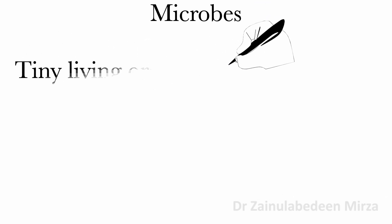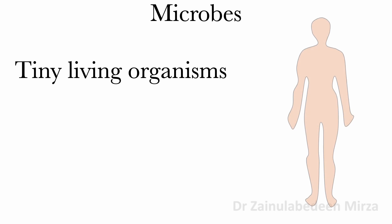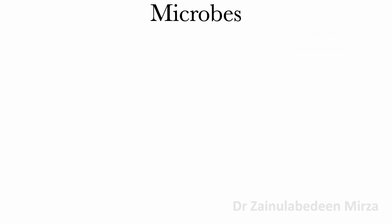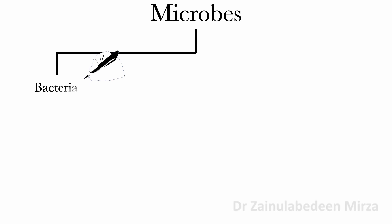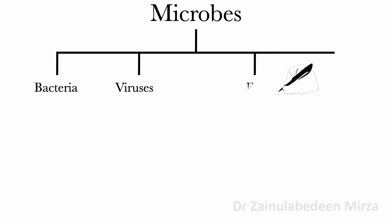Microbes are tiny living organisms found in water, soil, air, and other places. They are small and found around us. These organisms are essential in our lives. For example, they can make us sick and play essential roles in human health. Types of microbes are bacteria, viruses, fungi, and protozoa.